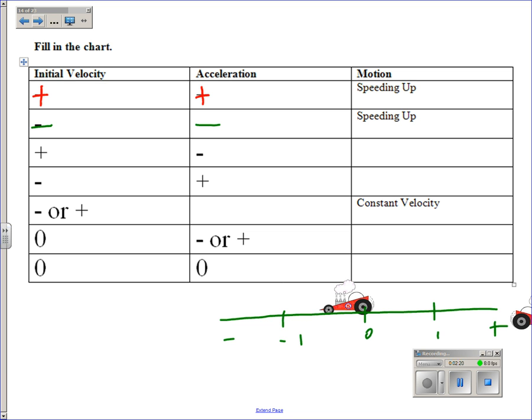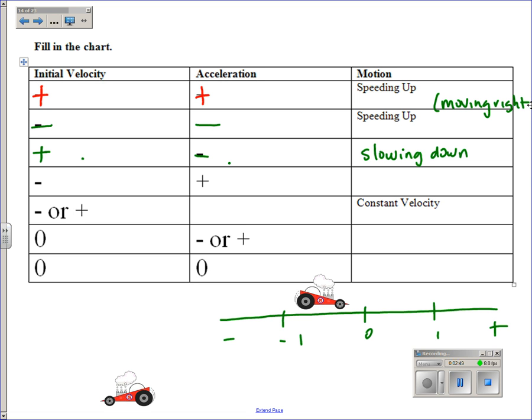If I have an object with an initial velocity that's positive but it has a negative acceleration, so now velocity and acceleration are in opposite directions, that object will be slowing down. So here we have an object moving right speeding up, now when we've got an object with a negative acceleration here, it's moving to the right but it's slowing down.